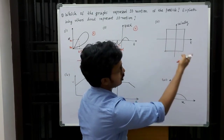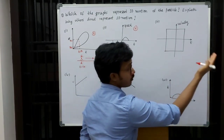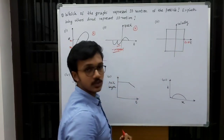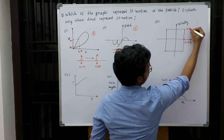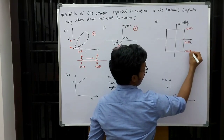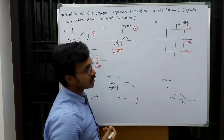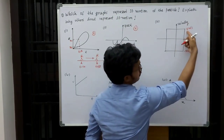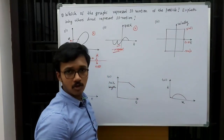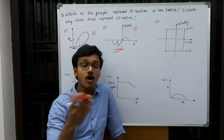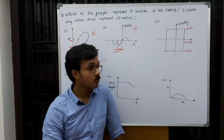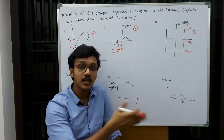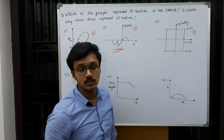Moving on to the next graph, we are given with a velocity-time graph. Similarly to how we explained the first question, let me take the same approach. Let me assume the time is two seconds, the velocity here is five meters per second and the velocity there is minus five meters per second. At the same time the particle is having velocities in opposite directions — positive five and negative five meters per second. A particle cannot have velocities in opposite directions at the same time. So the third graph is also not possible.